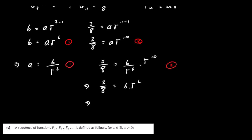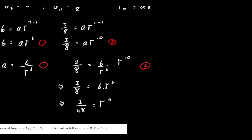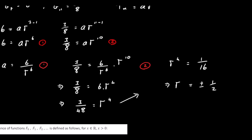Dividing across by 6 gives 3 over 48 equals r to the power of 4, which simplifies to 1 over 16 equals r to the power of 4. Taking the fourth root of both sides — we can think of this as taking the square root twice, which gives two values — so r equals plus or minus one half. There are two answers: r equals positive a half and r equals negative a half.